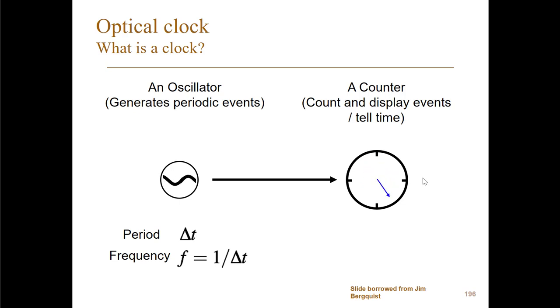And with the laser system we just described, we can actually count the number of oscillations—well, we can very accurately measure the number of oscillations, and this allows us to, as I say, have an optical clock.